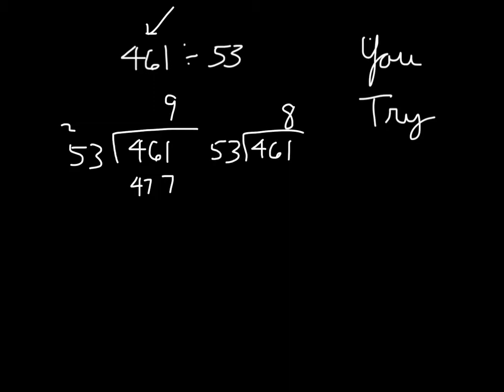Let's try 8. 8 times 3 is 24. 4, regroup the 2. 8 times 5 is 40, plus 2 is 42. And do a little regroup work to be able to get my remainder there. 8 remainder 37.